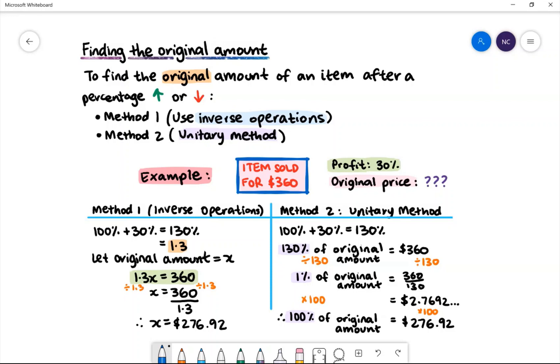To do this, we'll divide both sides by 130, so we'll have one percent of the original amount equal to 360 divided by 130, which is 2.7692. Therefore, to find 100% of the original amount, we'll multiply both sides by 100 to get $276.92.